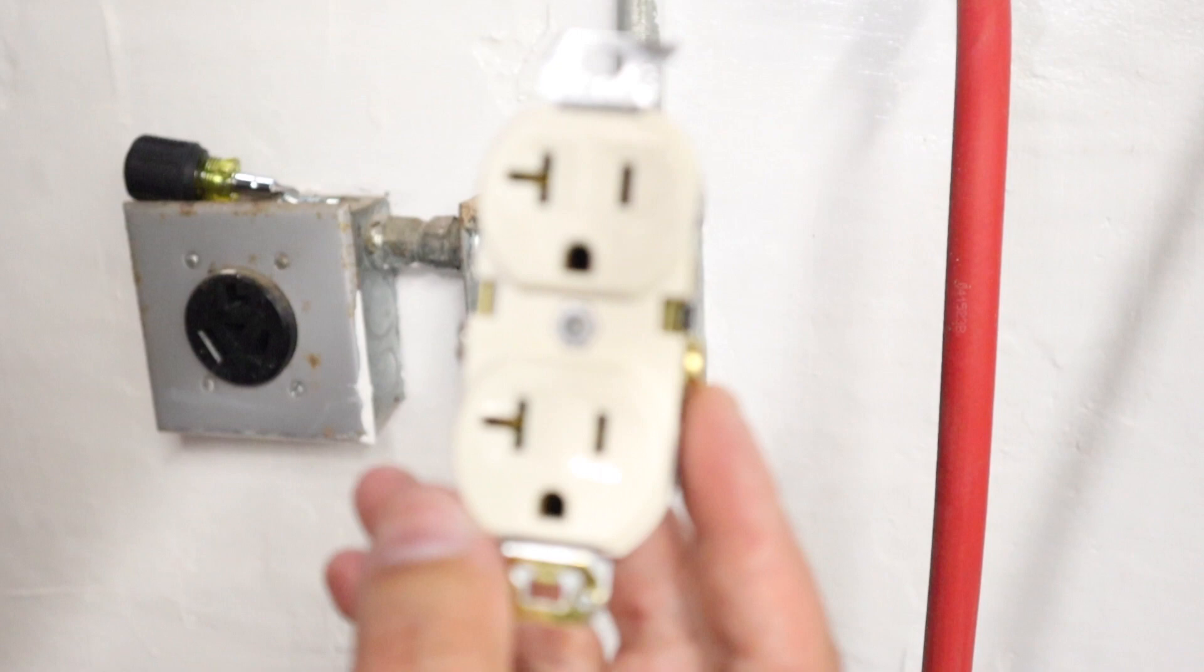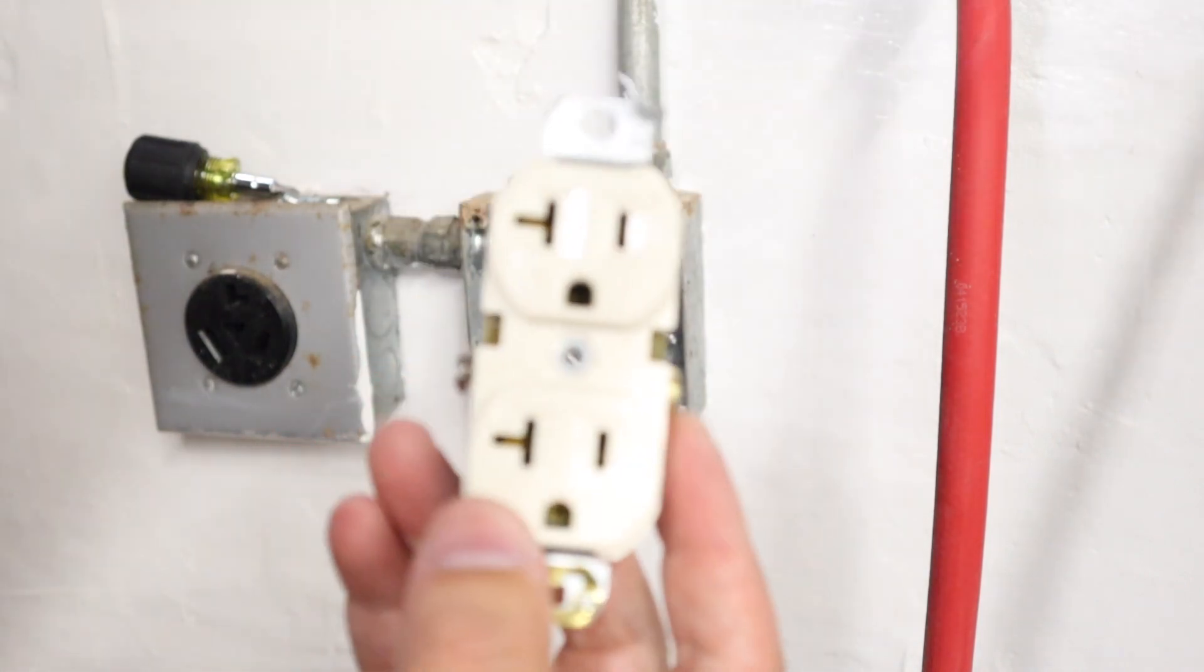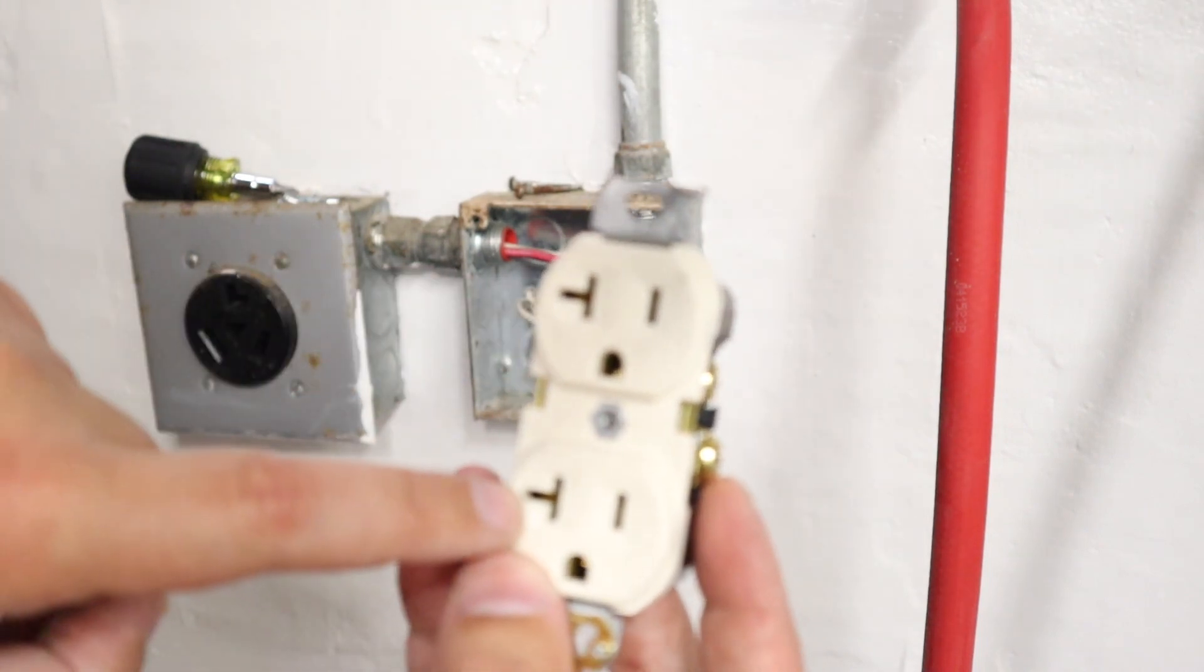We have the outlet cover off with the outlet inside of it. We've now taken off this old outlet, which is a 20 amp outlet as you can see by the little winky winky eye right there.